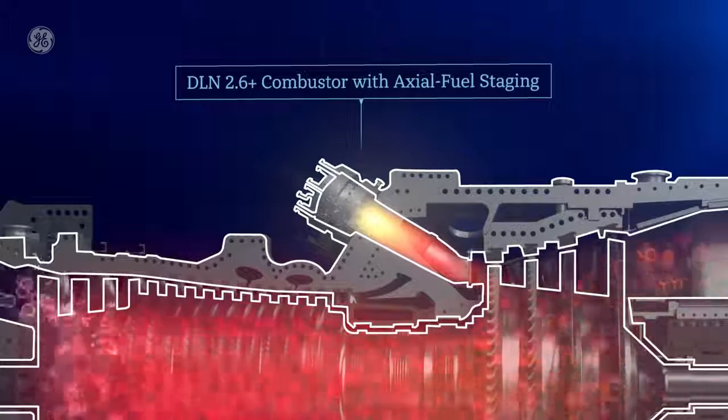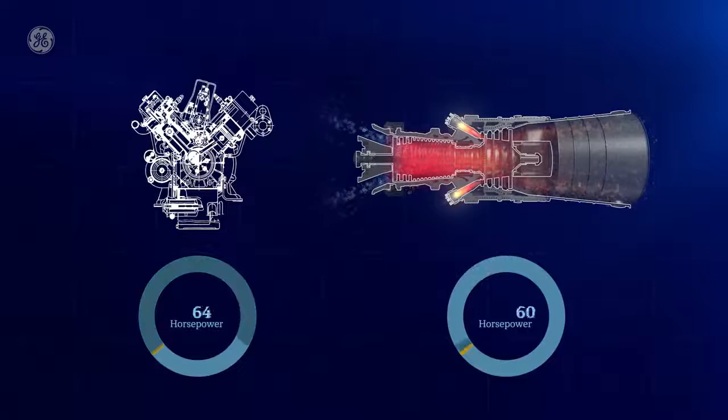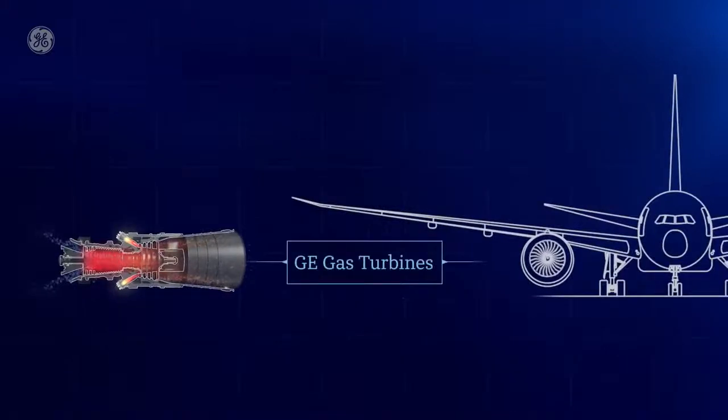This is chemical energy at work—essentially this is what happens in your family car's engine, but at about 2,900 times more horsepower. Actually, it's exactly like the turbine engines on jet airplanes.